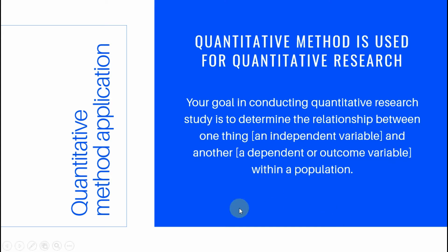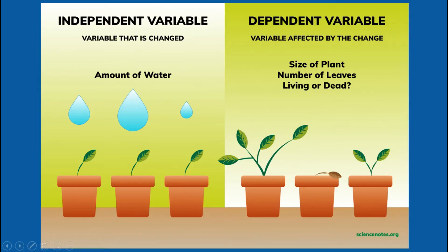Now, with regards to quantitative research, your goal in conducting your study is to determine the relationship between one thing, an independent variable, and another, the dependent or outcome variable within a population.